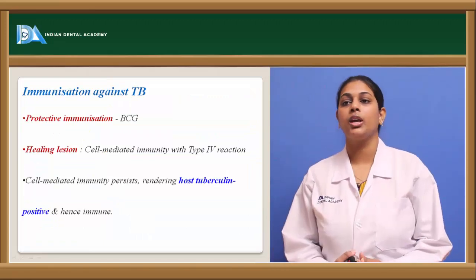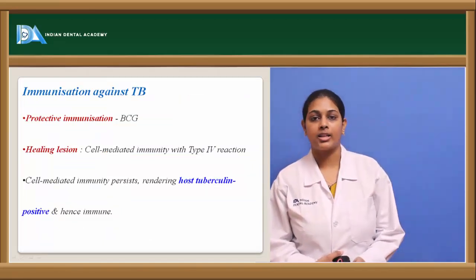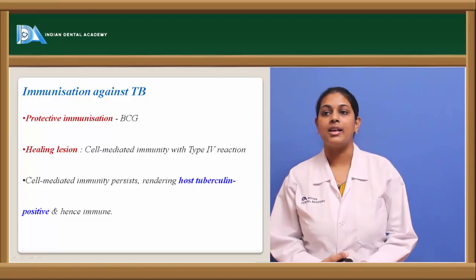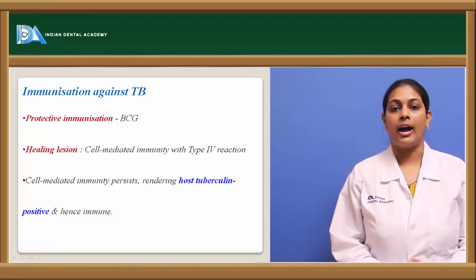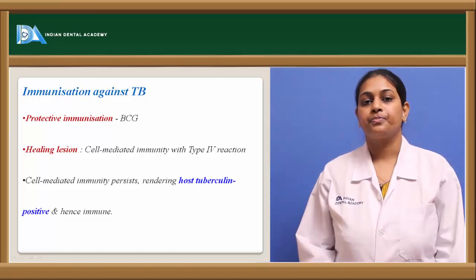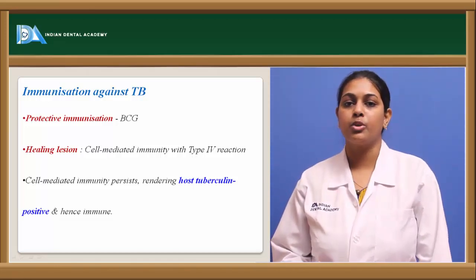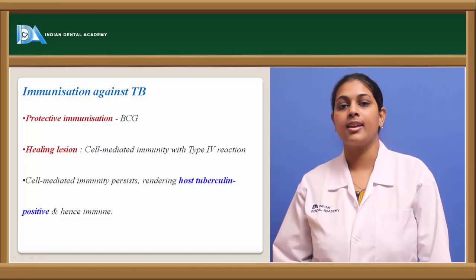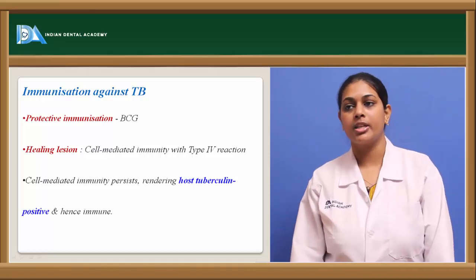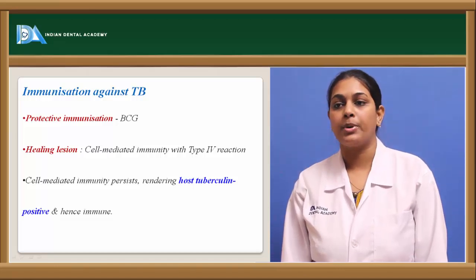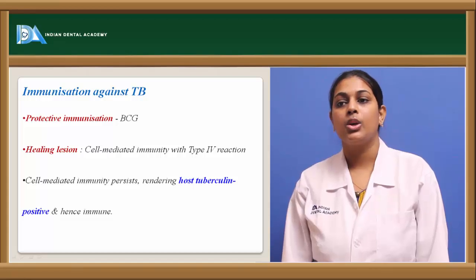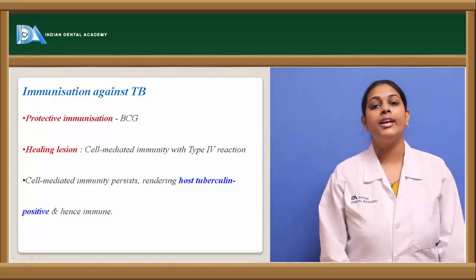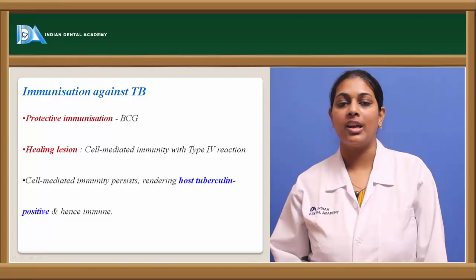Coming to immunization against TB: the patient is advised to take a vaccine known as BCG, which stands for Bacille Calmette-Guérin, which protects our body from Mycobacterium tuberculosis. In an immunized patient, there is a healing lesion because of cell-mediated immunity along with Type 4 delayed hypersensitivity. This cell-mediated immunity persists, rendering the host tuberculin positive and hence immune.